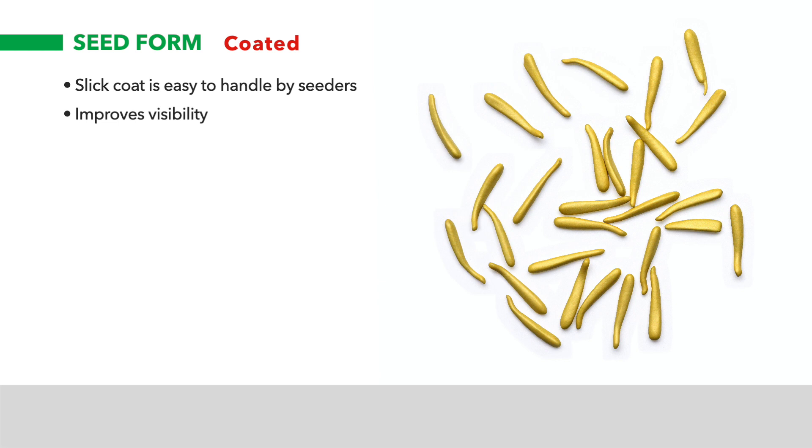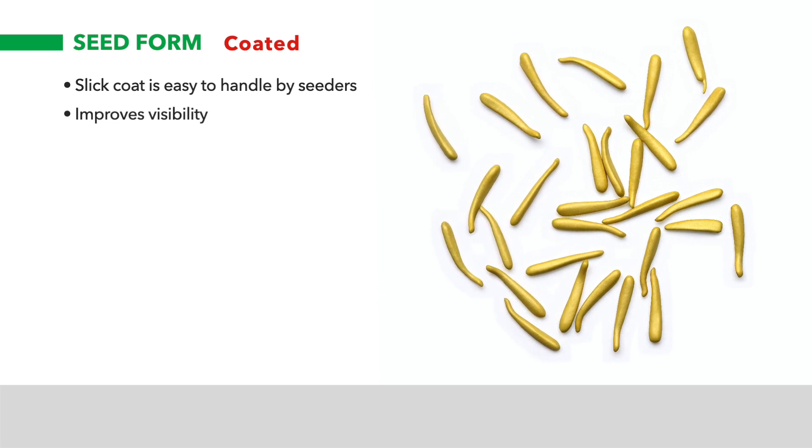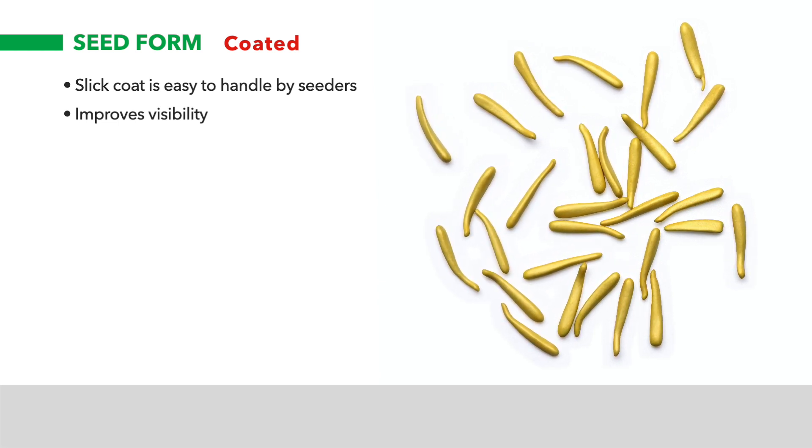Sometimes referred to as film coat or slick coat, coated seed is more visible and easier to handle by the grower and seeders.